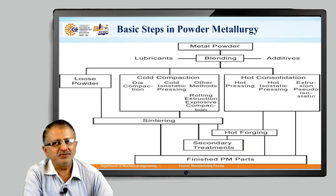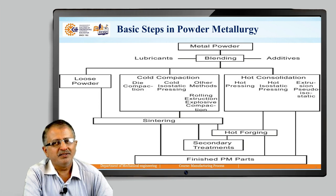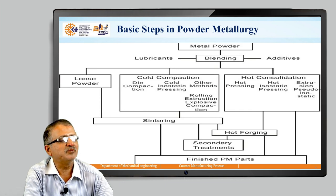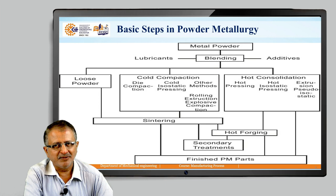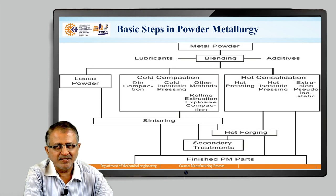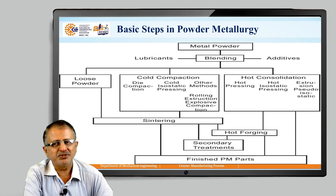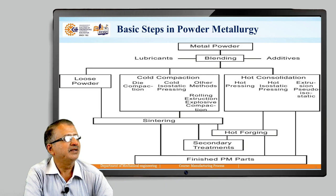There are two methods — hot compaction or cold compaction — depending on the processing requirement. The powder is mixed; while mixing the metal particles, the powder produced has some additives, binders, and lubricants added to get the best mixture suitable for the powder metallurgy process. Then the compaction process is carried out.